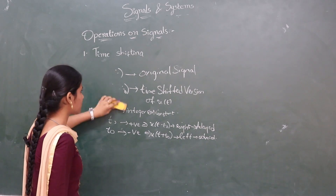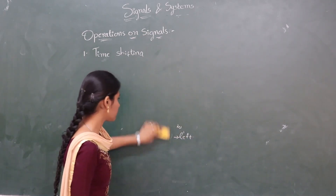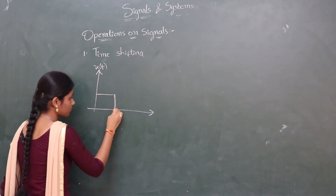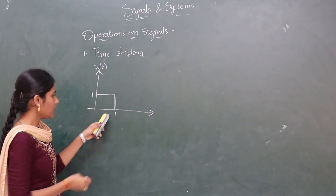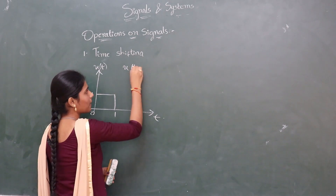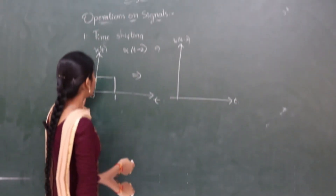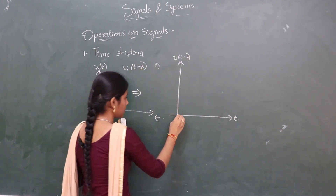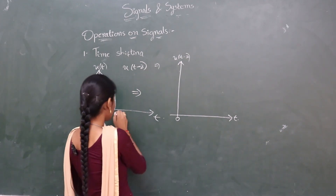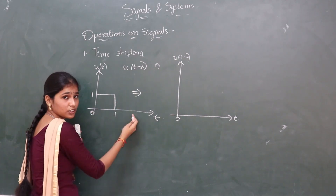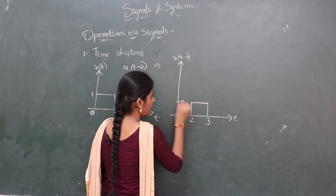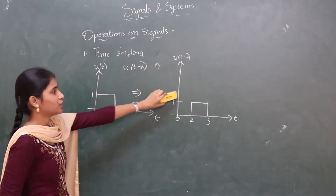Let us take an example of a continuous time signal and perform a shifting operation on it. I have taken a signal x of t with time one division and amplitude 1. I am performing the shifting operation x of t minus 2, which means we are moving the signal 2 units towards the right. The amplitude remains the same. The signal started at 0 and is now moving 2 units towards the right, so it goes from 0 to 2. This is the right shifted version of the signal.